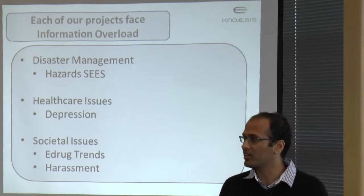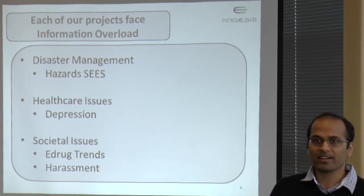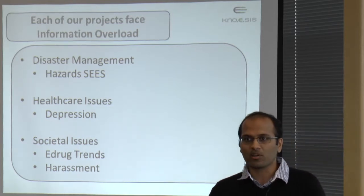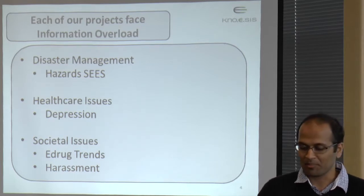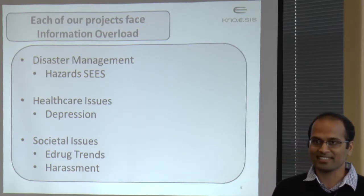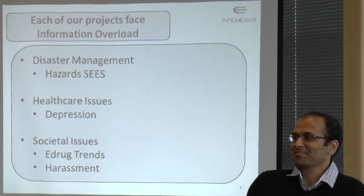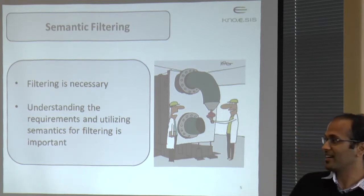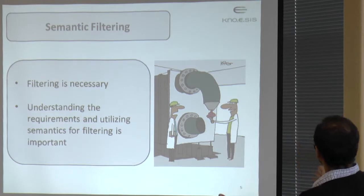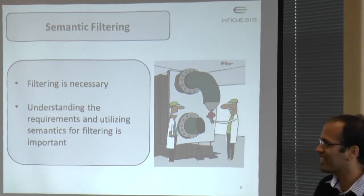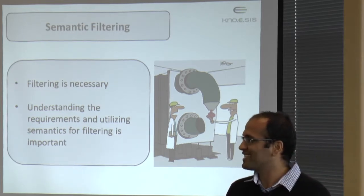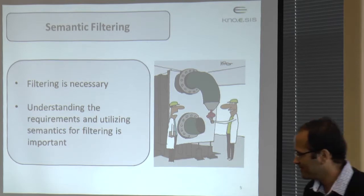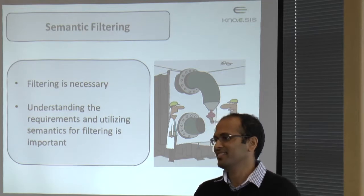The requirements for each of these projects are different in terms of the kind of tweets we filter. And if you don't filter the right tweets for each of these projects, we'll face a problem in terms of the kind of analysis we are doing — we might go haywire. For example, for the harassment project, if you start getting tweets of Hazard Cease, which is a disaster management project, you don't know what analysis you are doing. So that is exactly the reason we need filtering. We need to filter the right stuff what we want to analyze. If you have noise in your data, whatever you analyze will be bad. And if you leave out some of the important data, your analysis will be incomplete.